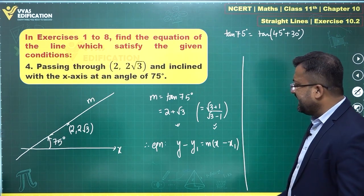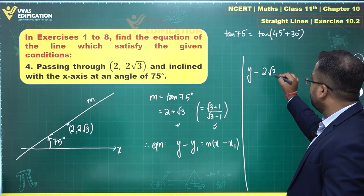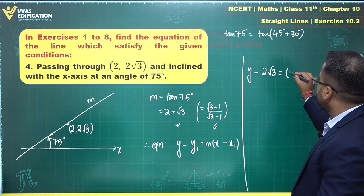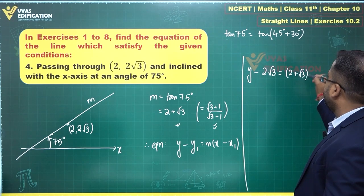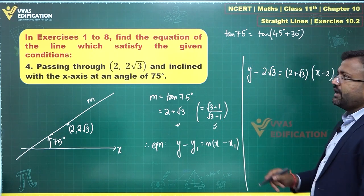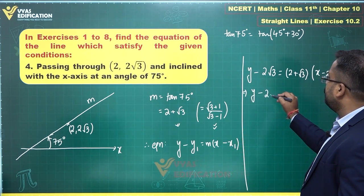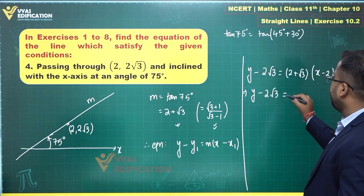So where does that take us? This becomes y minus y1 is 2 root 3 is equal to slope which is 2 plus root 3 times x minus x1 which is x minus 2. This is what you get.